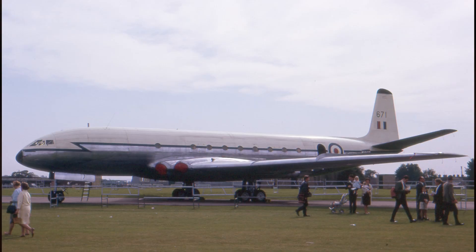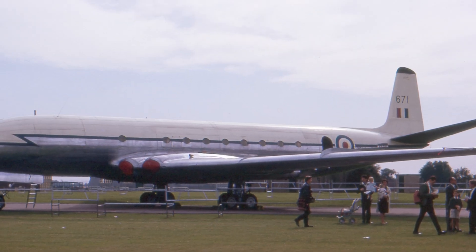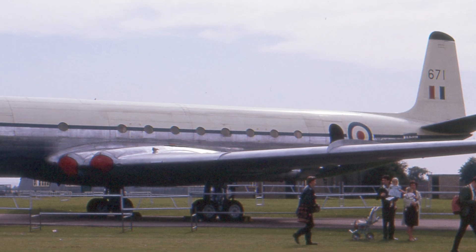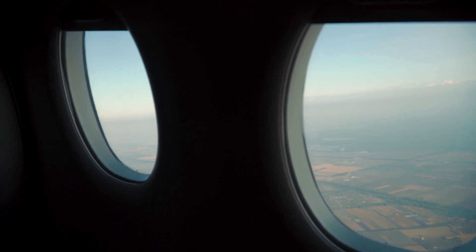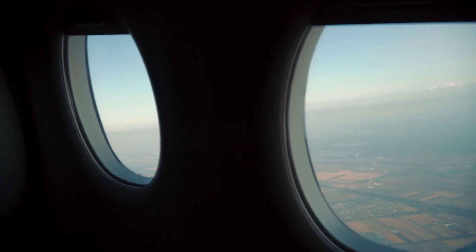In response to the investigations, de Havilland designed Comet-2 with oval windows, thus eliminating stress concentrations. The oval windows can still be seen today on all pressurized commercial airliners.